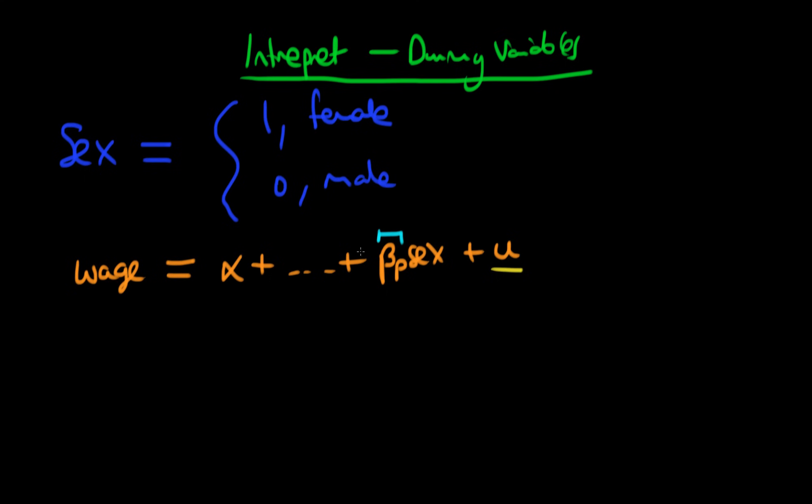So what's the interpretation of a coefficient on our dummy variable, which only takes on one of two values? It either takes on a value of one if an individual is female, and takes on a value of zero otherwise.